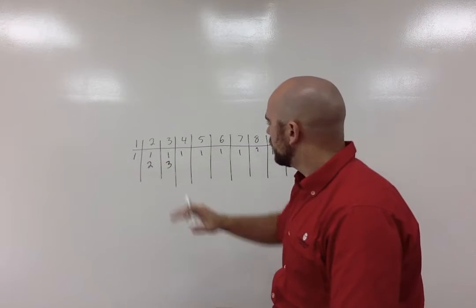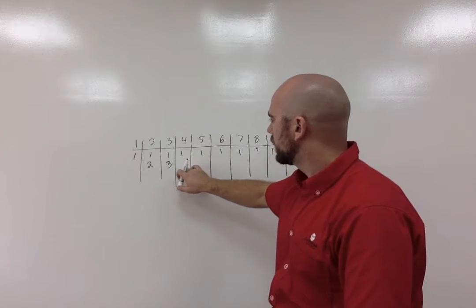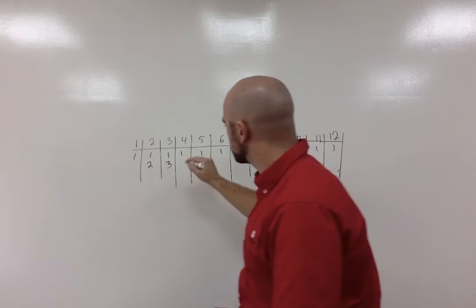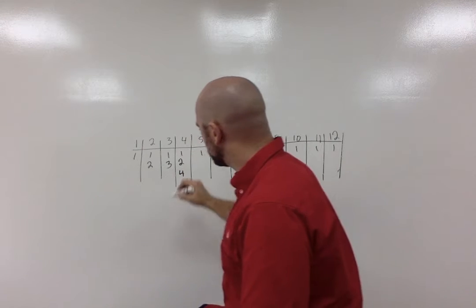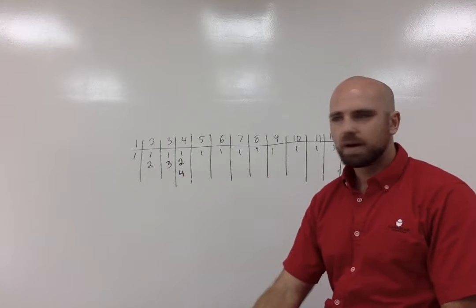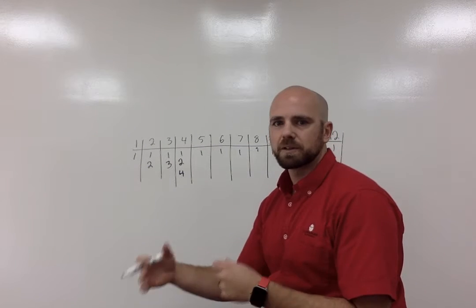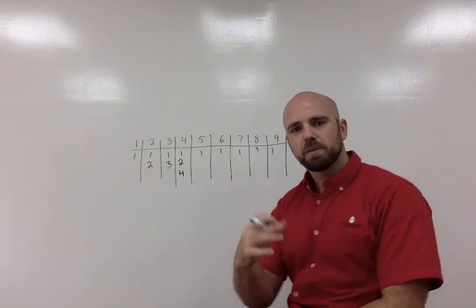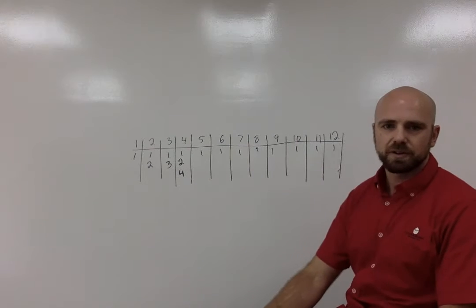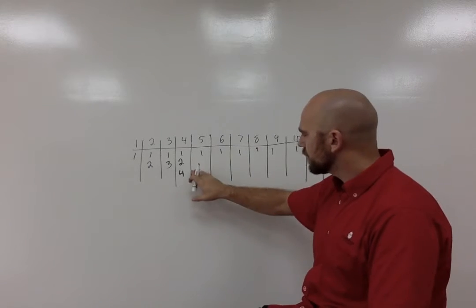What about four? Well, we have one times four, but we also have two times two. So I'm going to put one, two, and four. The next one I look at is I have five. What can I multiply together to get five? If you wanted to pause and you wanted to finish this whole thing on your own, go ahead. Now that you're kind of getting the idea.